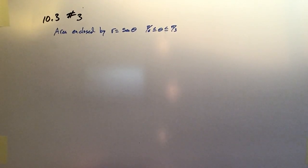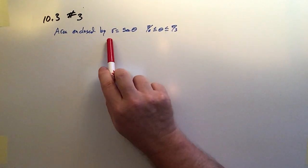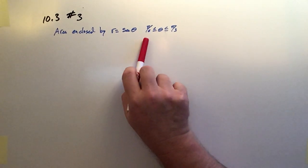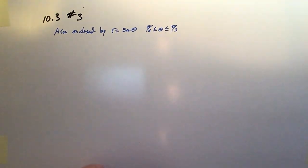Okay, this is 10.3 number three. We're looking for the area enclosed by r equals secant theta between pi over 6 and pi over 3.